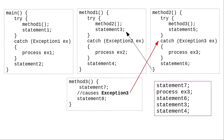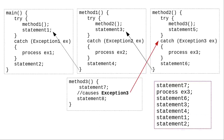Method 2 ends normally, and control returns to its caller, method 1. It proceeds to do statement 3 and statement 4. There's no exception handling needed here. When method 1 ends normally, it returns control to main, which does statement 1 and statement 2.